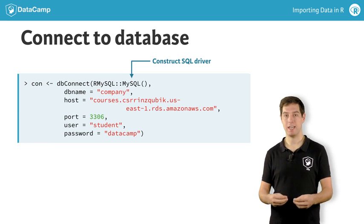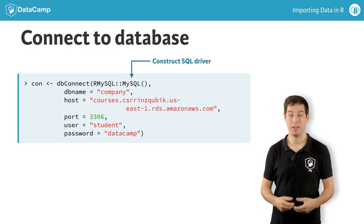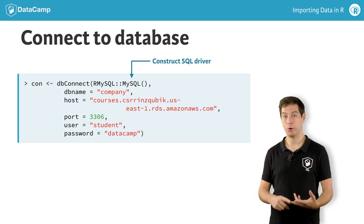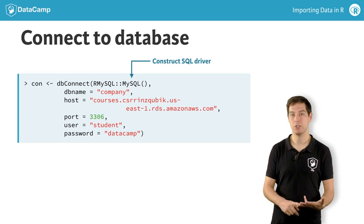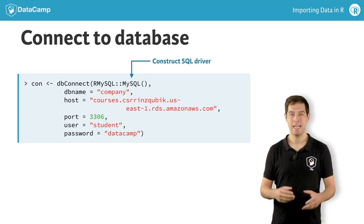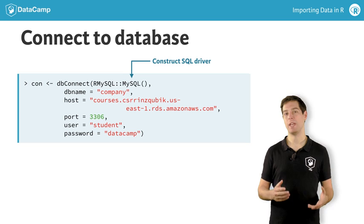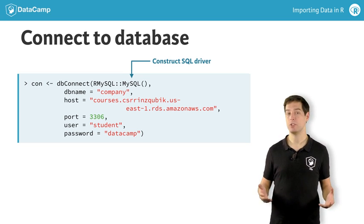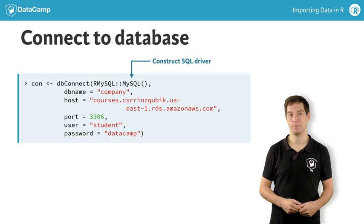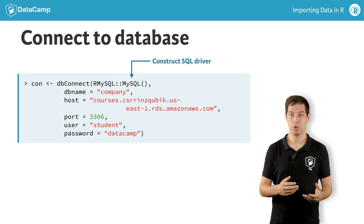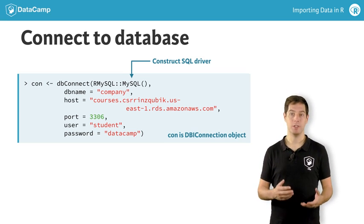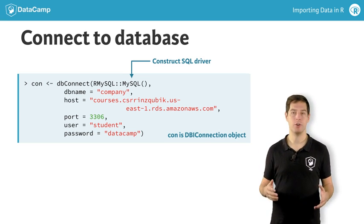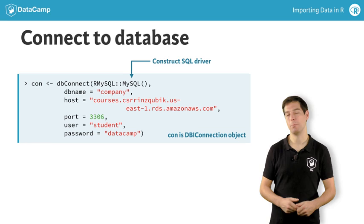Next, you have to specify the database name, where the database is hosted, through which port you want to connect, and finally the credentials to authenticate yourself. This is an actual database that we're hosting, so you can try these commands yourself. The result of the dbConnect call is the DBI connection object. You'll need to pass this object to whatever function you're using to interact with the database.